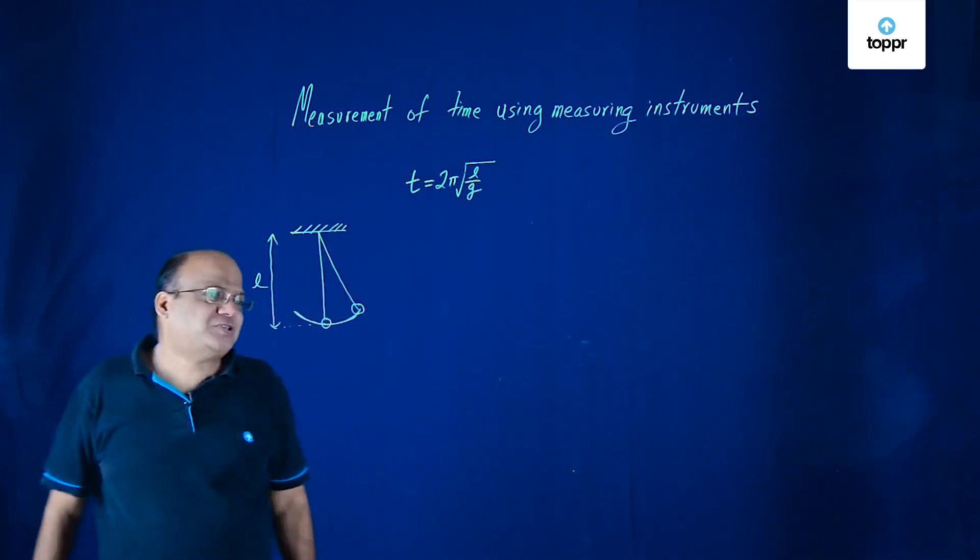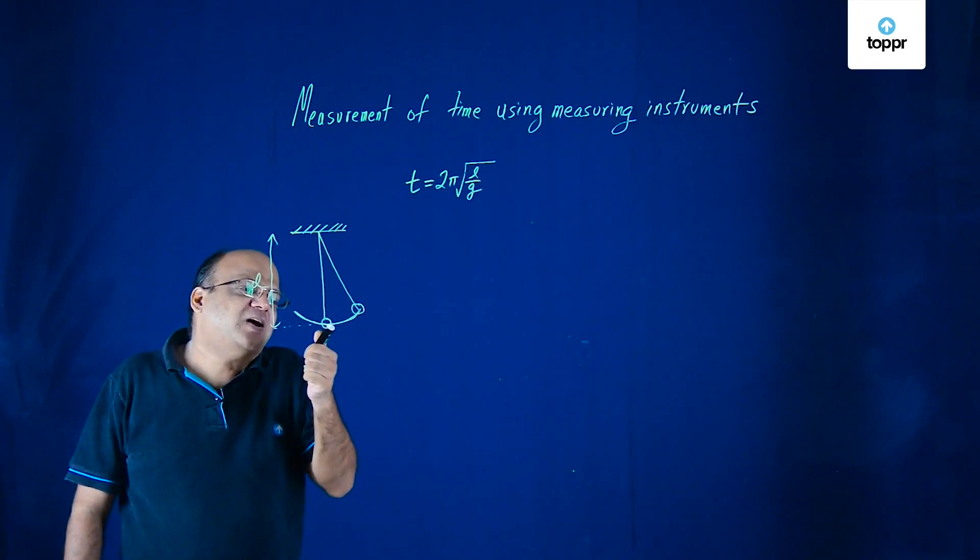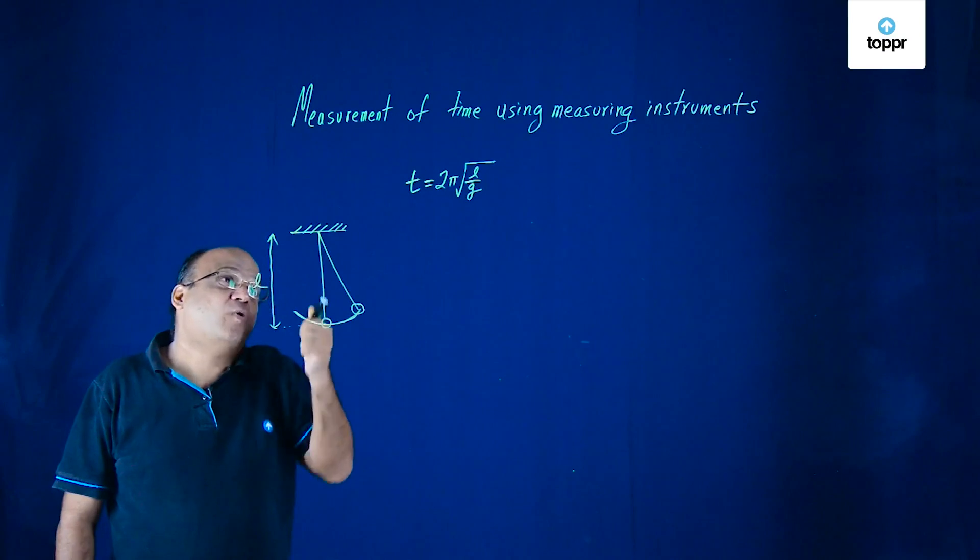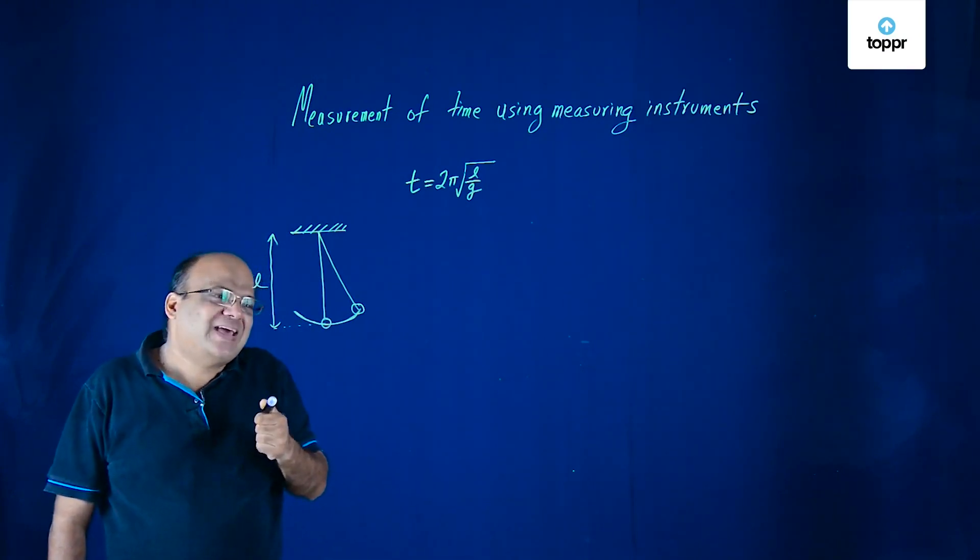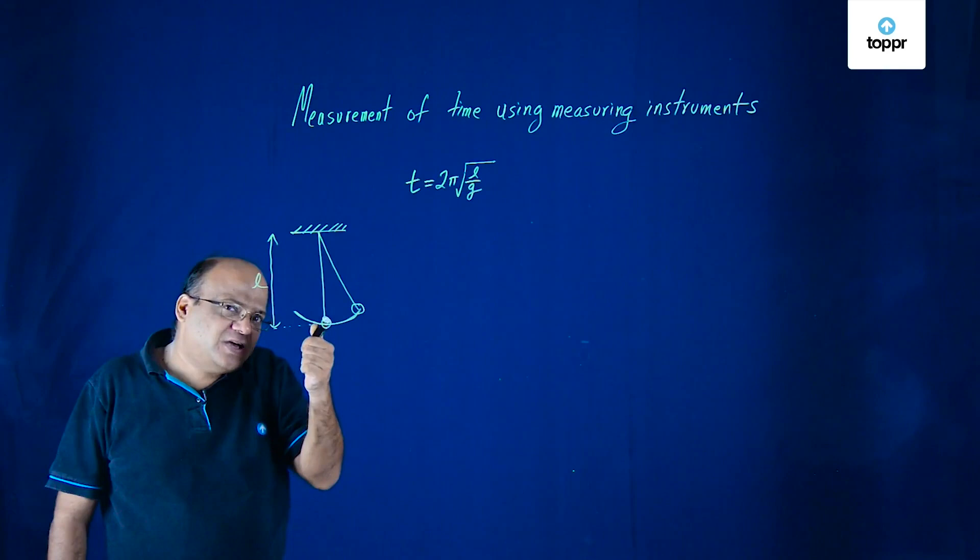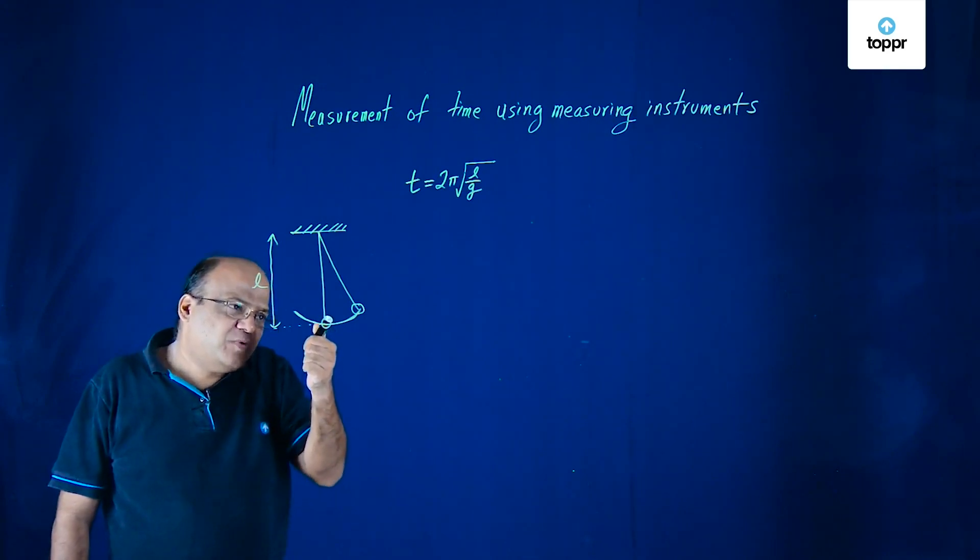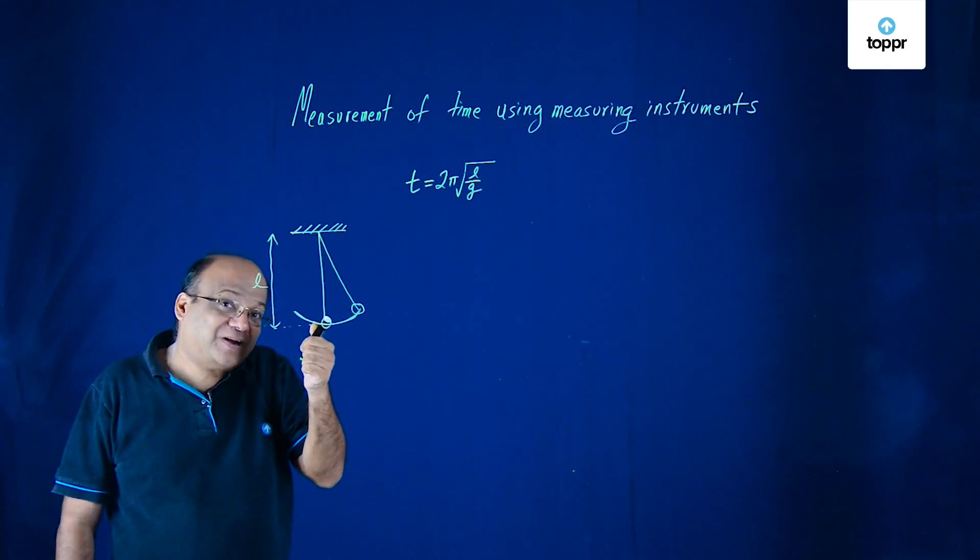One interesting question you can be asked is: suppose this pendulum is filled with sand or filled with water and that water or sand is flowing slowly out of this bob. What will happen to the time period? As this sand flows out, the center of mass of this bob is initially shifted down.